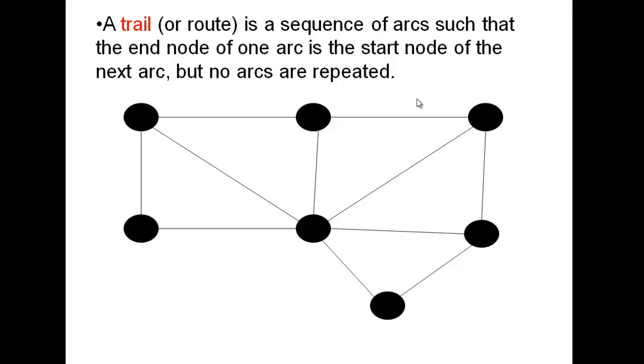A trail, or sometimes referred to as a route, is a sequence of arcs such that the end node of one arc is the start node of the next arc, but no arcs are repeated. So a trail is exactly the same as a walk, but with no repeated arcs.